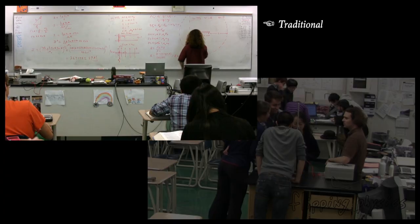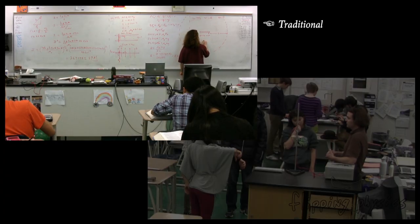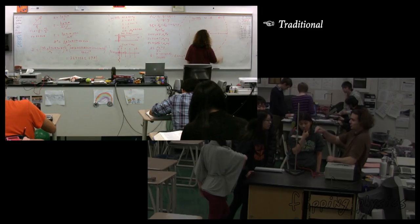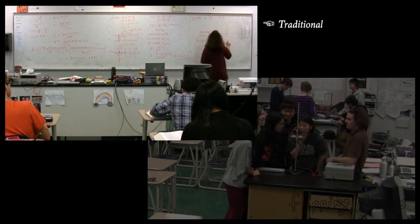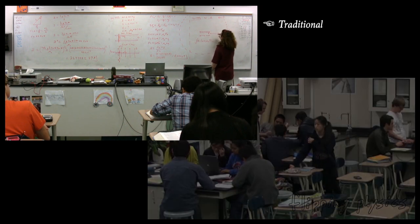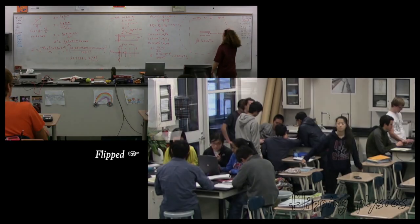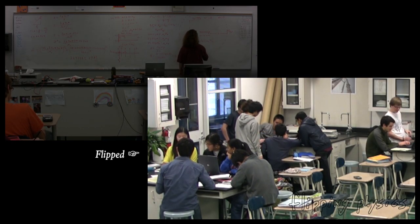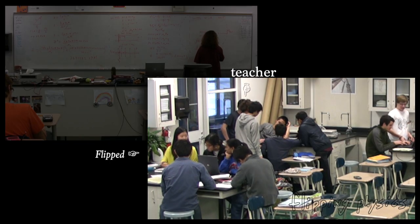We can start with Ampere's law: the closed loop integral of B dot ds equals mu-naught times the current on the inside. We know B is up, ds is also up. They're equal — yeah, that makes sense.